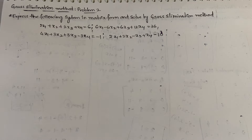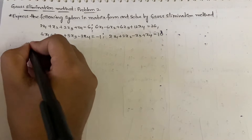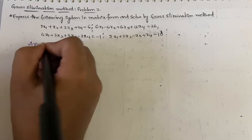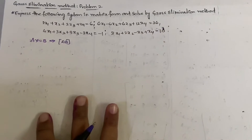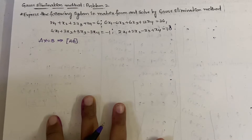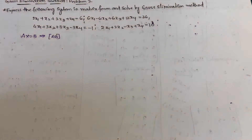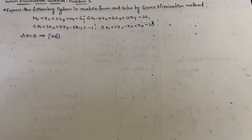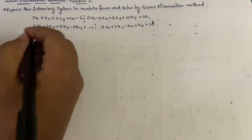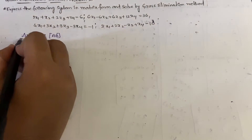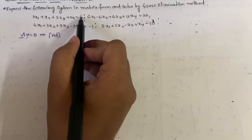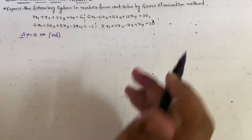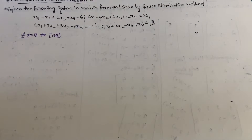First, what you have to do is express the system in the form AX = B, and then from that write the augmented matrix [A|B]. I'm directly writing the augmented matrix because the video will become very long otherwise. A is the coefficient matrix, X is [x1, x2, x3, x4], and B is the constants like 6, 36, -1, 10.